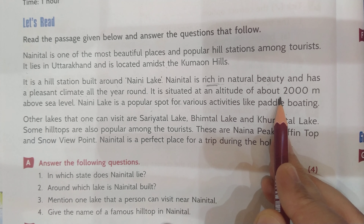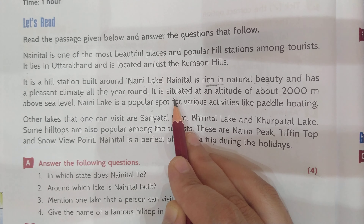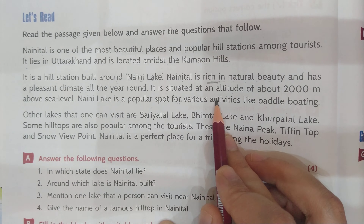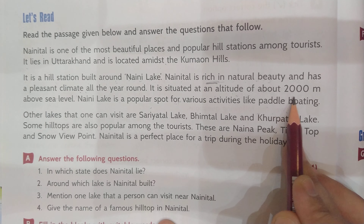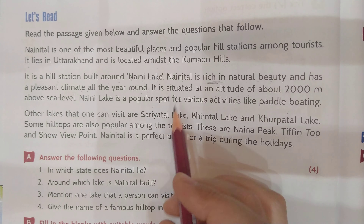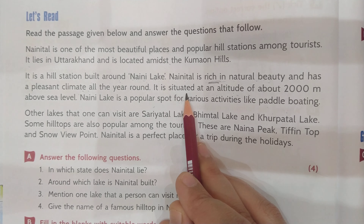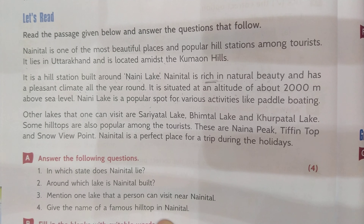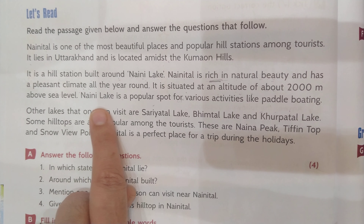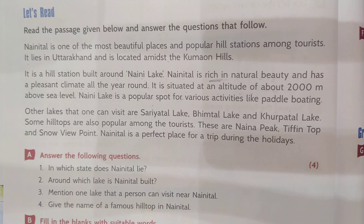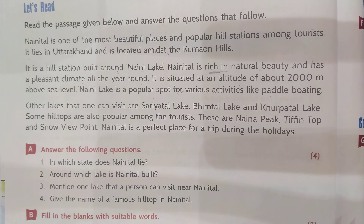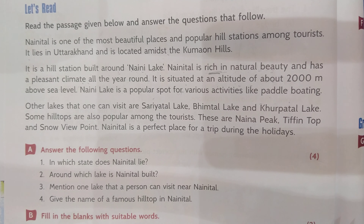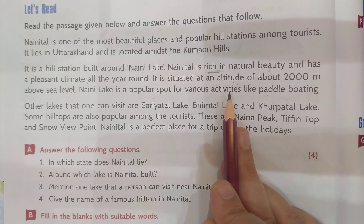It is situated at an altitude of about 2000 meters above sea level. Situated means located. Altitude means height. So Nainital is situated or located at a height of almost 2000 meters above sea level. Naini Lake is a popular spot for various activities like paddle boating — many of you must have done paddle boating sometime in your life, and many of you might have visited Nainital also, so you would be able to relate to it.